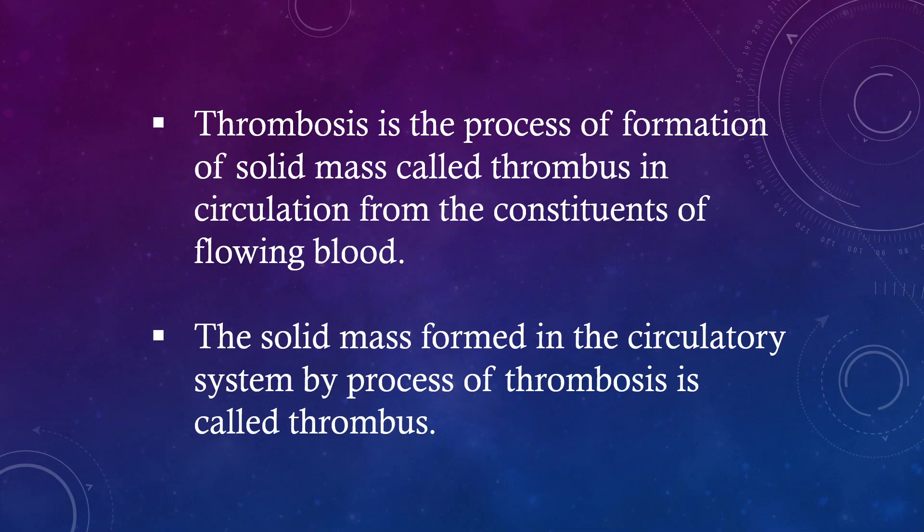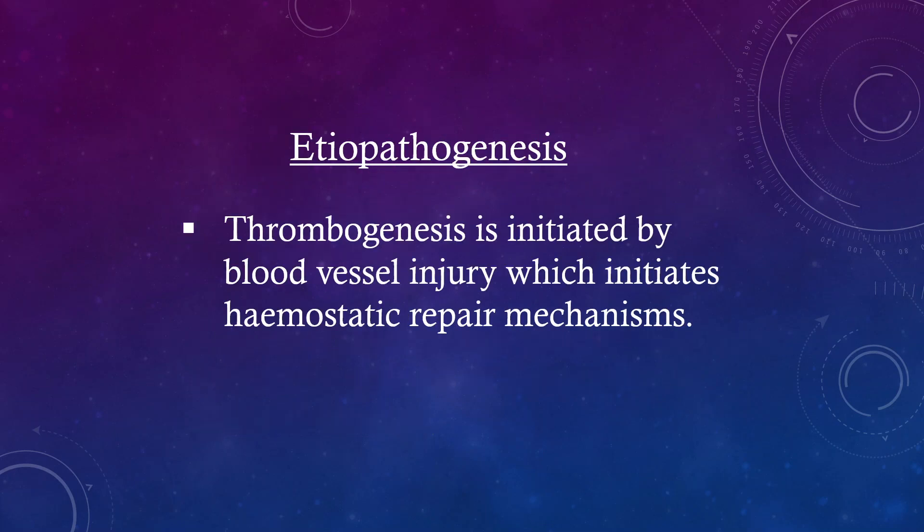The solid mass formed in the circulatory system by the process of thrombosis is called thrombus. It is a pathogenesis. Thrombogenesis is initiated by blood vessel injury which initiates hemostatic repair mechanisms.